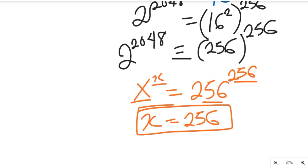You want us to confirm if that is truly the solution, then we'll have to check. If we check, remember, we are given that x to the power of x is equal to 2 to the power of 2048.